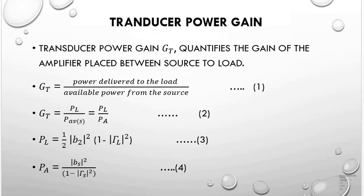A transducer is a device which converts one form of energy into another form. Power gain GT is the ratio of output to input. In a transducer, the power gain is defined as the ratio of power delivered to the load to the power available from the source. So GT equals PL divided by P_available.